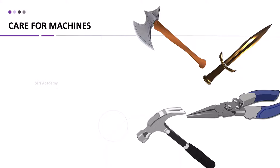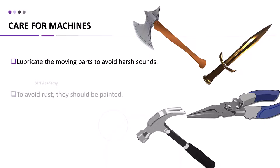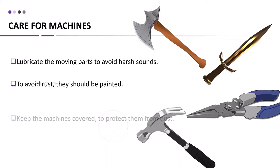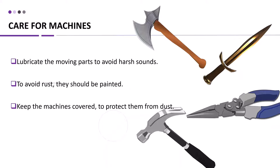Care of machines. We need to take care of these machines to make them function well. We can take care of these machines by lubricating the moving parts to avoid harsh sounds. To avoid rust, they should be painted. Keep the machines covered to protect them from dust. It helps them in functioning well.